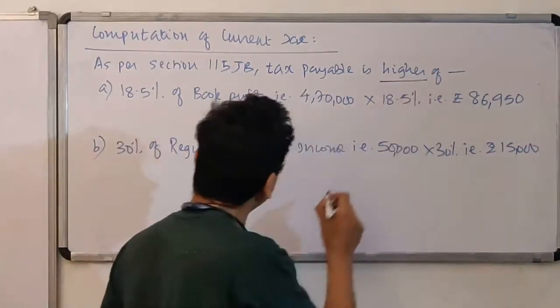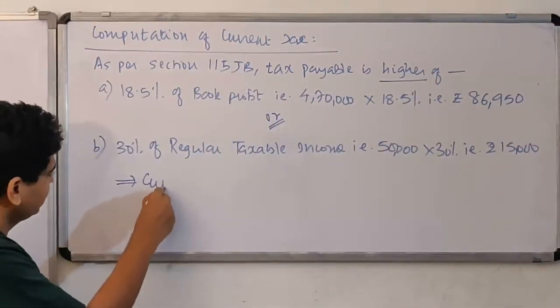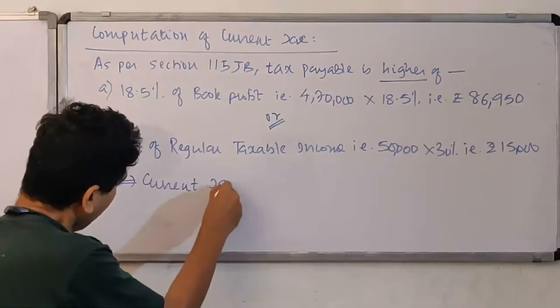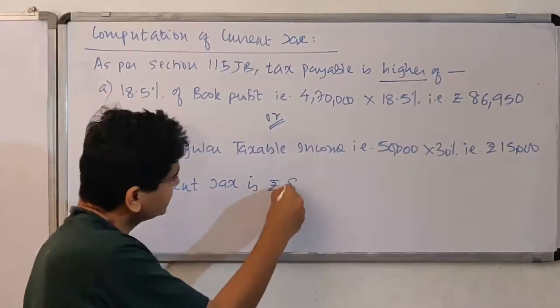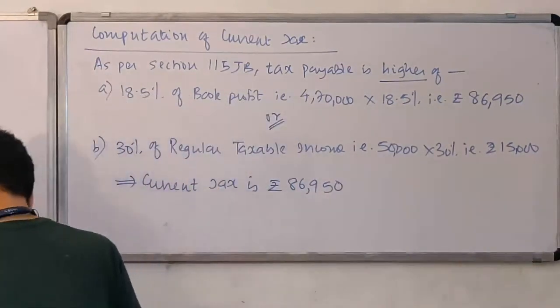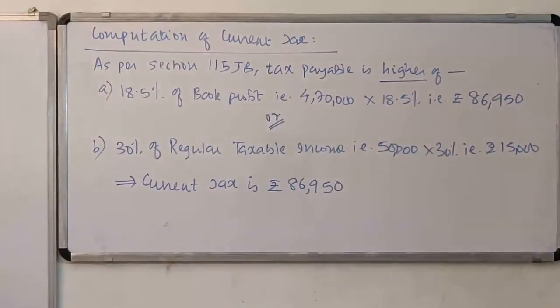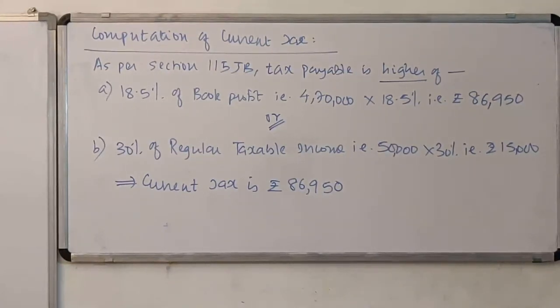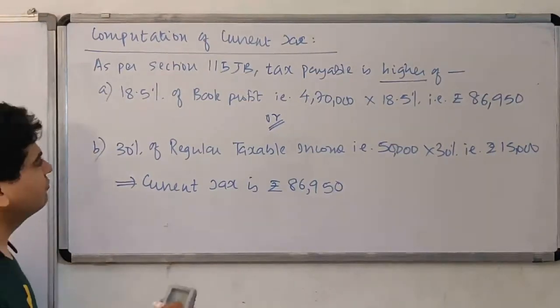That is 50,000 into 30%, 15,000. It is higher of, so we say implies current tax is Rupees 86,950. If you are still writing, you can pause the video and complete it. So this was the case of current tax.